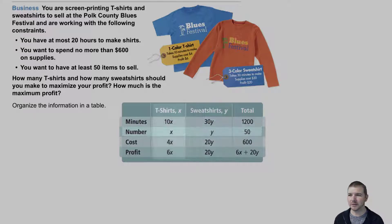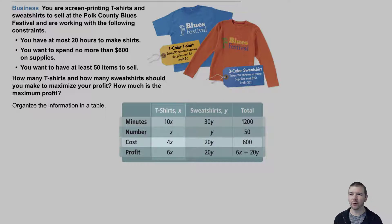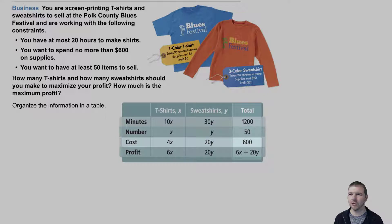For the number row, t-shirts are x and sweatshirts are y, with a total of 50 — because you want to have at least 50 items to sell. For the cost of production row, t-shirts cost 4x, sweatshirts cost 20y, and the total is 600, because you want to spend no more than $600 on supplies.